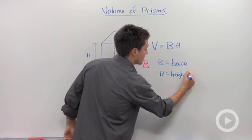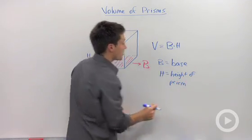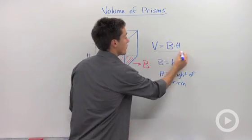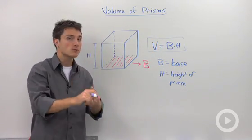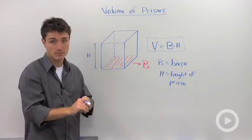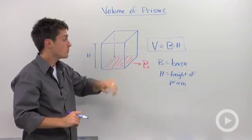The reason why this formula is useful is because you might have a triangular prism, a trapezoidal prism, a hexagonal prism, and this formula will work no matter what kind of prism you have. So whatever your base area is, you're going to substitute in that formula.